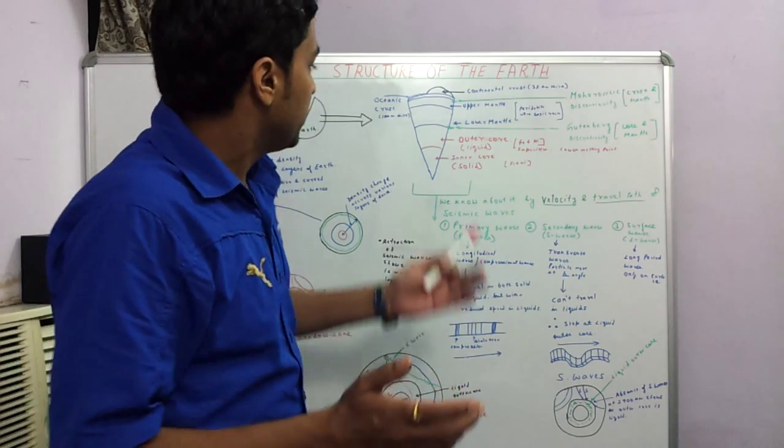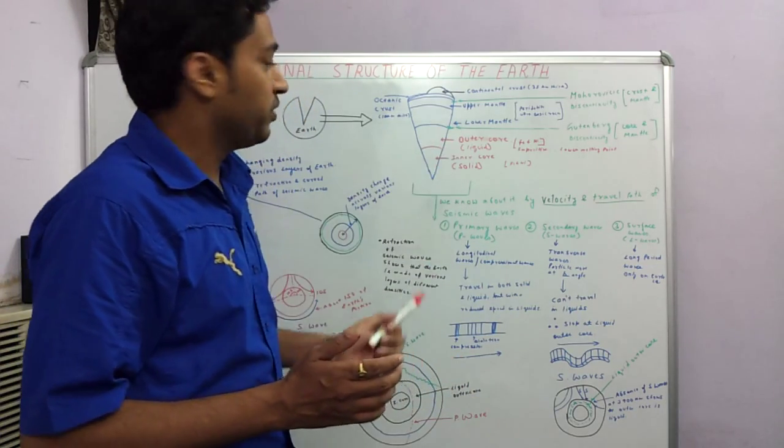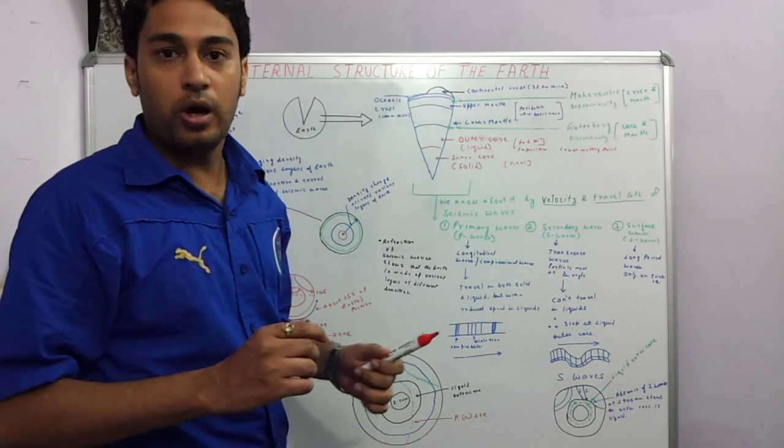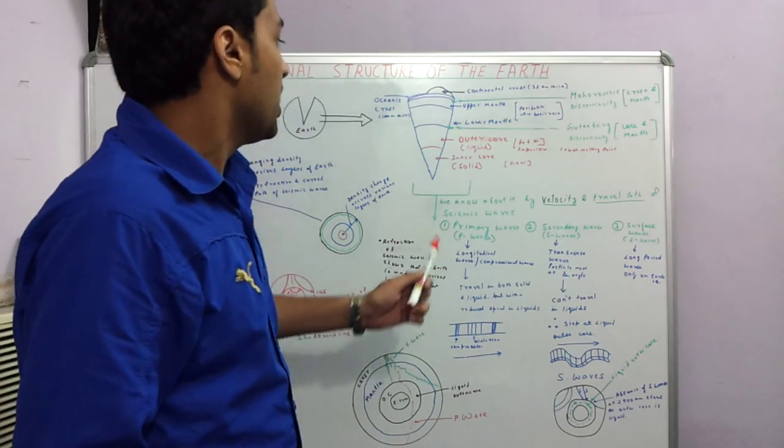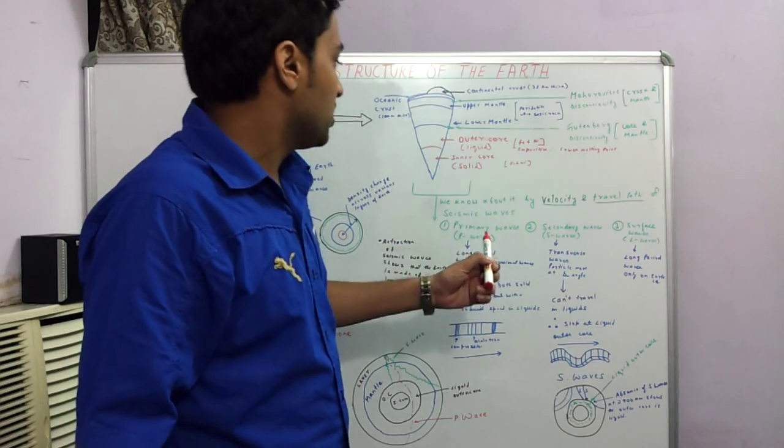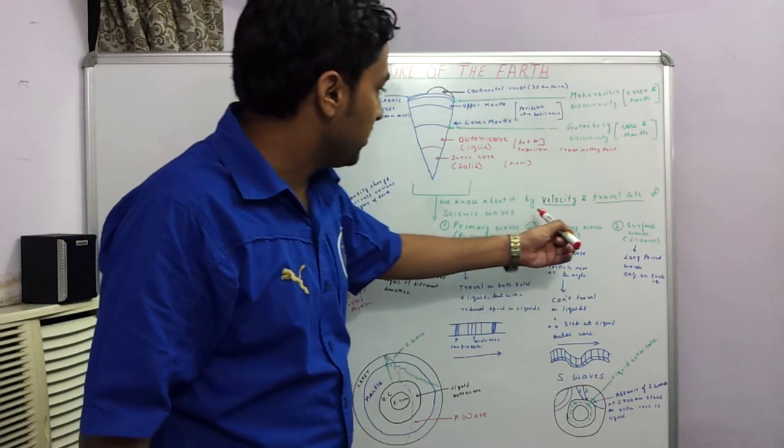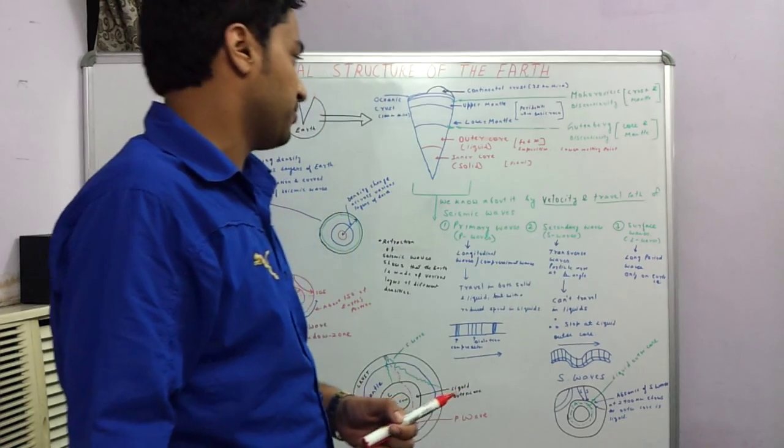How do we know about this structure that we see? We know it with the help of the earthquake waves or the seismic waves. These waves help us understand it by the velocity they adopt and the travel path of these waves.